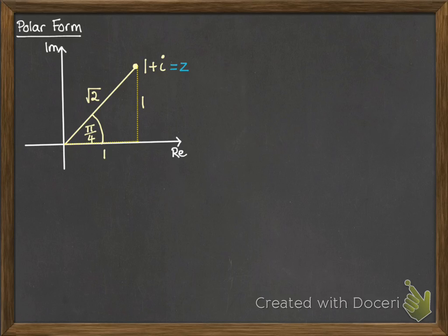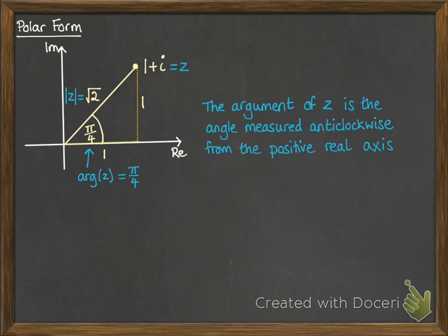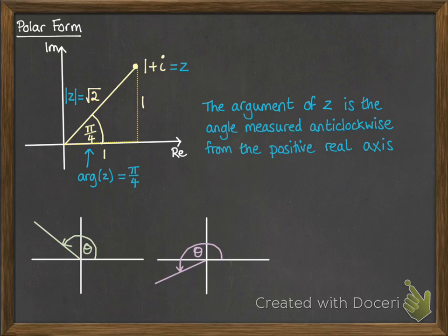So here we have z being our complex number, the modulus of z is root 2, and this bit here is called the argument of z, which is given the notation of arg z. So the argument of z is the angle that's measured anticlockwise from the positive real axis. So in this one you'd have theta representing the argument of z being, again, anticlockwise from the positive real axis.